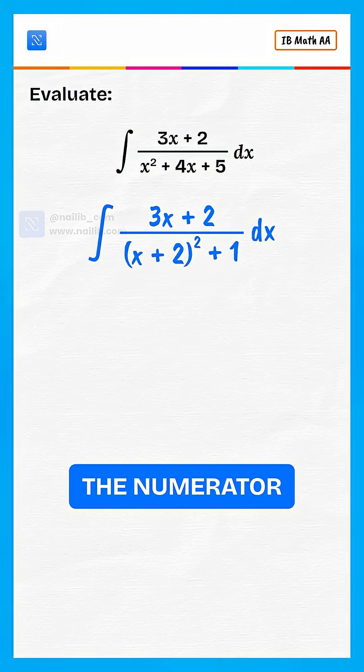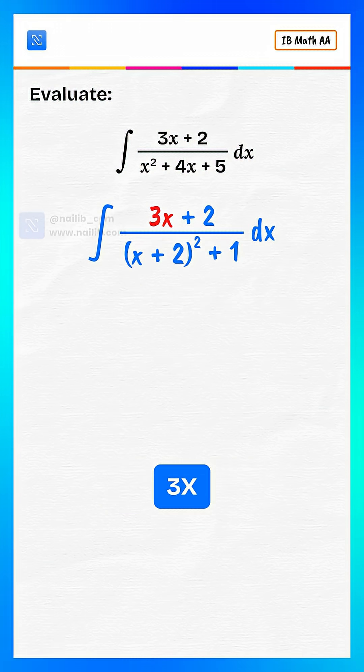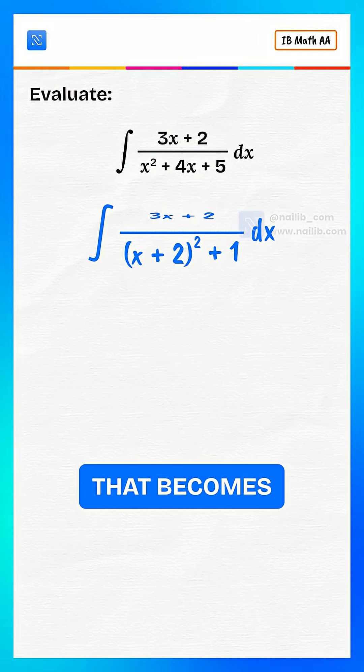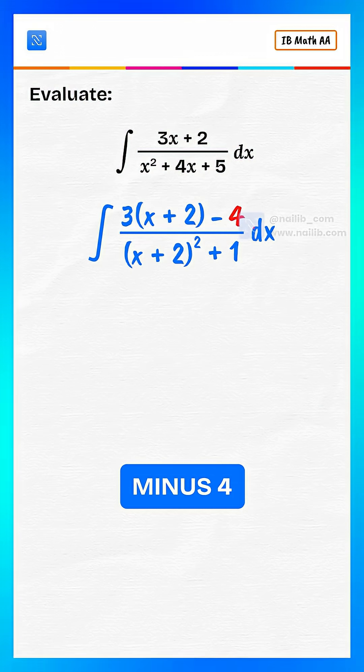Also split the numerator cleverly. We can express the numerator 3x plus 2 in terms of x plus 2, so that becomes 3 times x plus 2 minus 4.